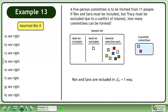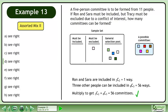Ron and Sarah are included in 2 choose 2 equals 1 way. Three other people can be included in 8 choose 3 equals 56 ways. Multiply to get 2 choose 2 times 8 choose 3 equals 56 committees.